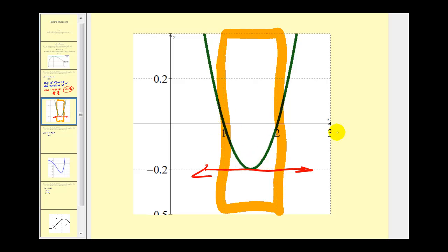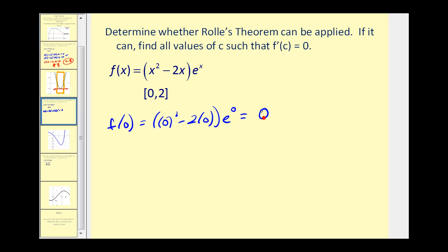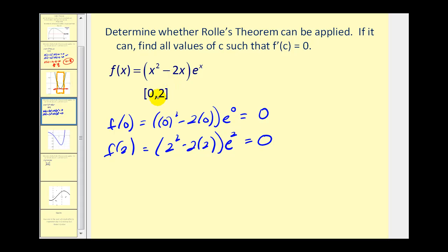Let's try another one. The first step is to determine if f of zero equals f of two. We have zero squared minus two times zero, times e to the zero — that's zero times one, which is zero. F of two equals two squared minus two times two, which is zero, times e squared, which is also zero. This function is differentiable and continuous on this interval, so we can apply Rolle's Theorem.